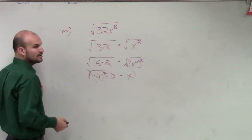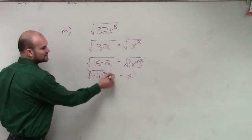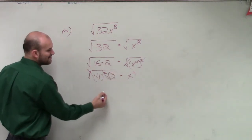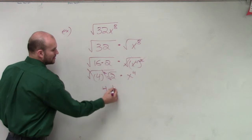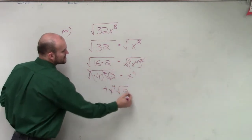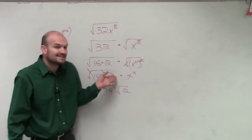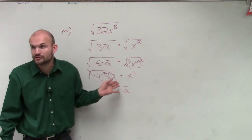Well, 4 squared undoes it with that, but then we still have the square root of 2. So therefore, my final answer is going to be 4 x to the fourth times the square root of 2. I can't take the square root of 2, so that's going to remain under the radical.